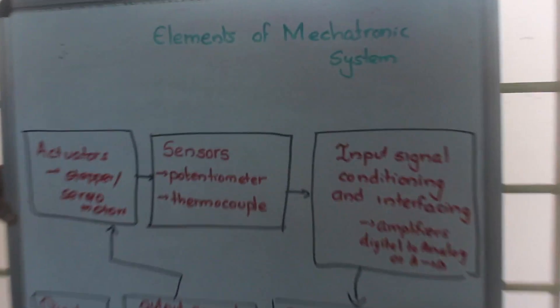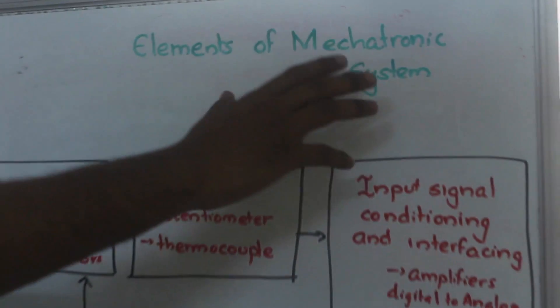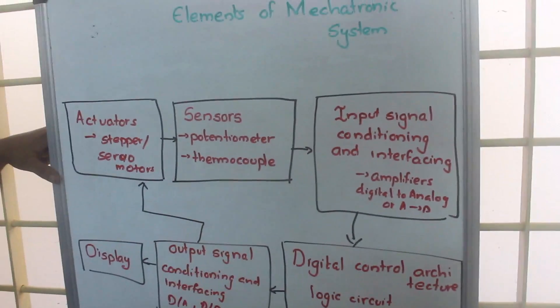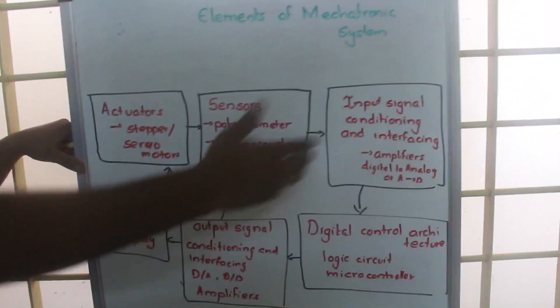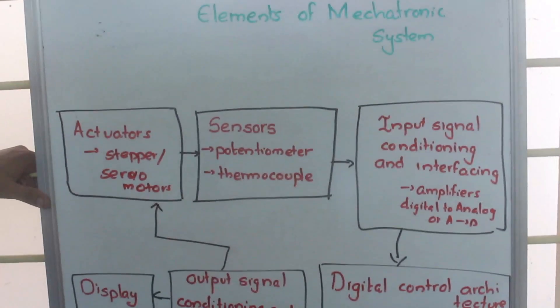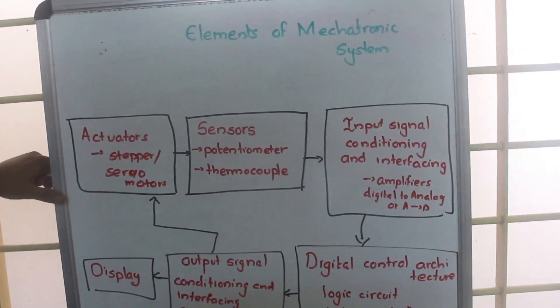Let's look into elements of the mechatronic system. The mechatronic system will have a mechanical part and an electronic part. Actuation and sensors constitute the mechanical part, and there are several conditioning processes and display which come under the electronic part.